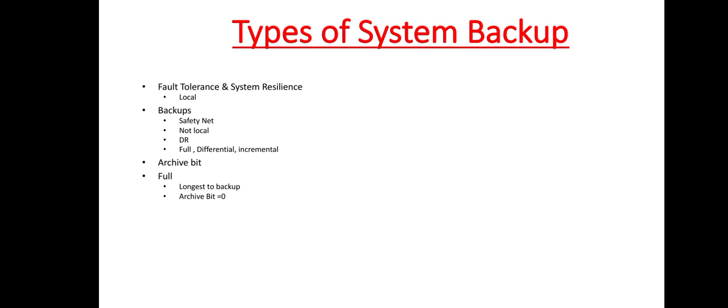Now after taking the full backup of a system, you set the archive bit of each and every file on the primary system to the value of 0. It means that all the files have been backed up and are now unchanged since the last full backup, so there is no need to backup any file on the system.